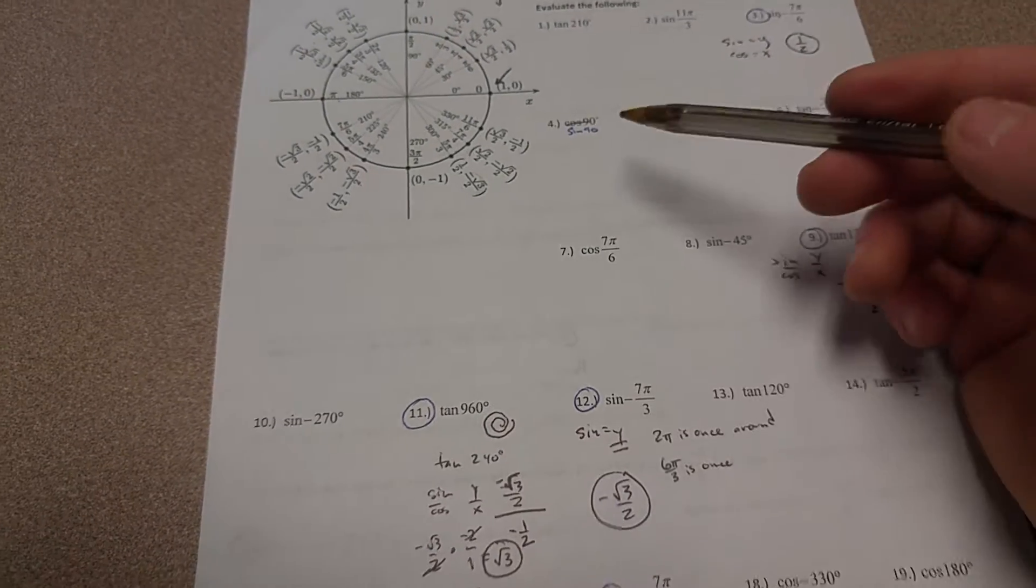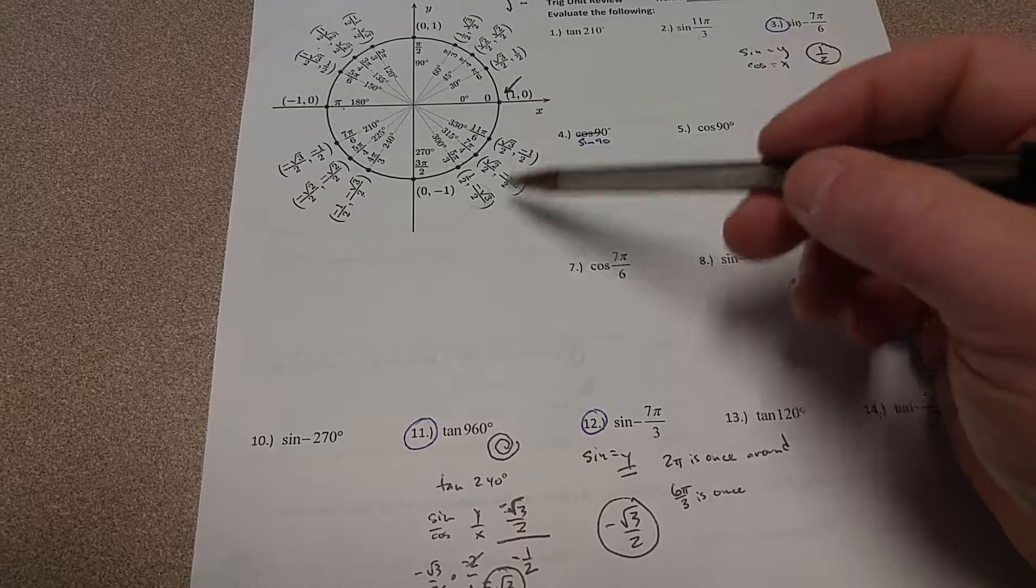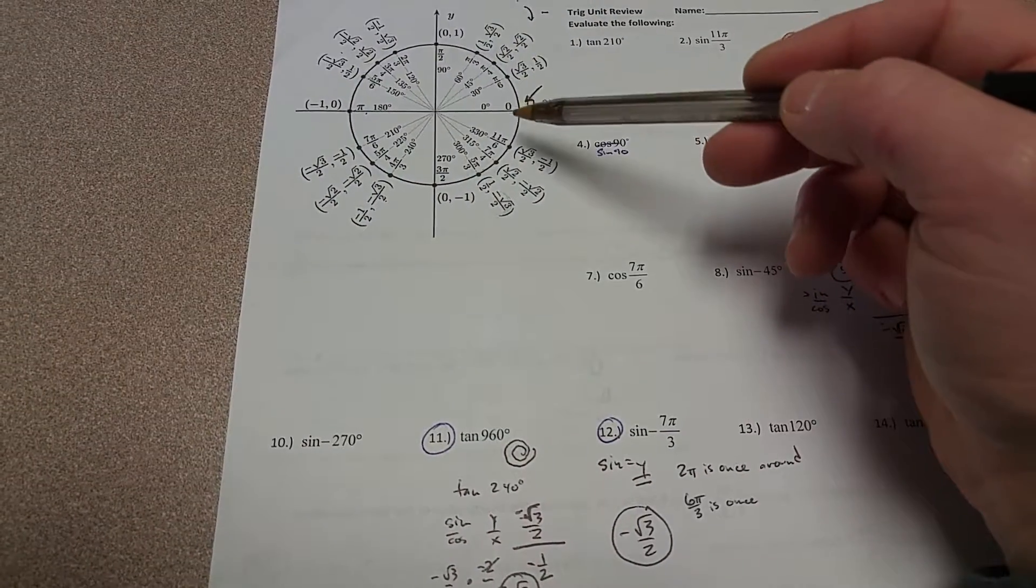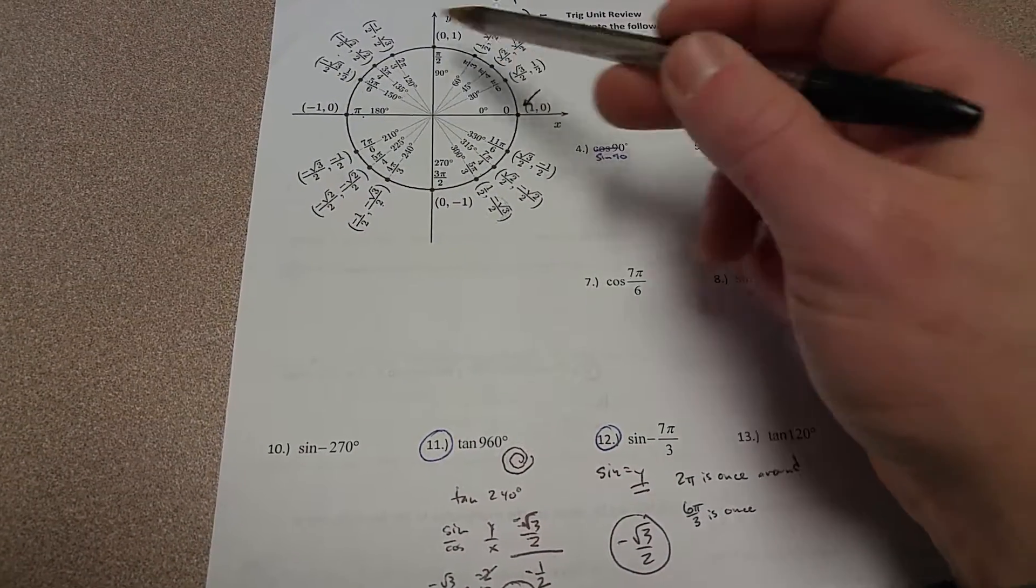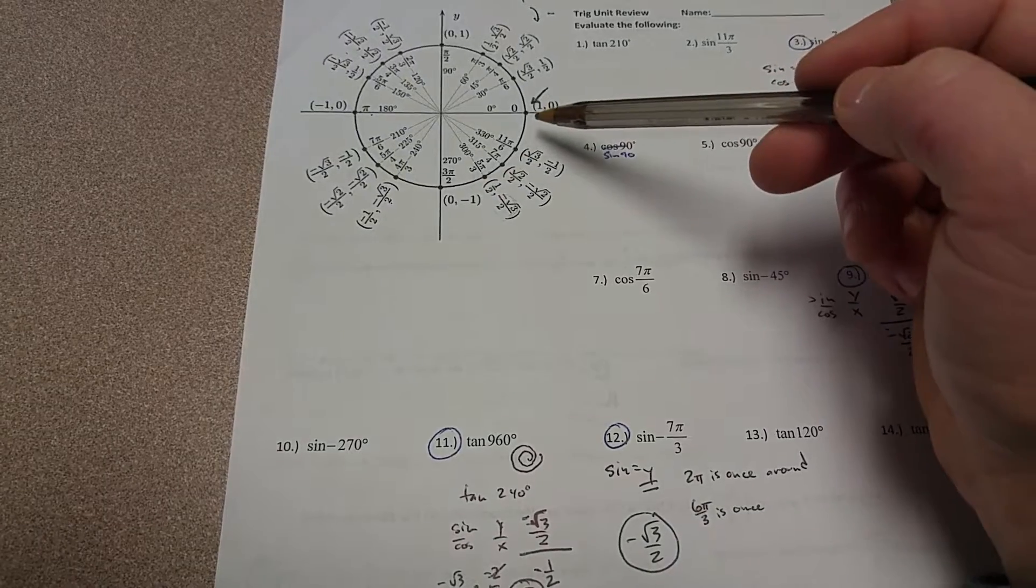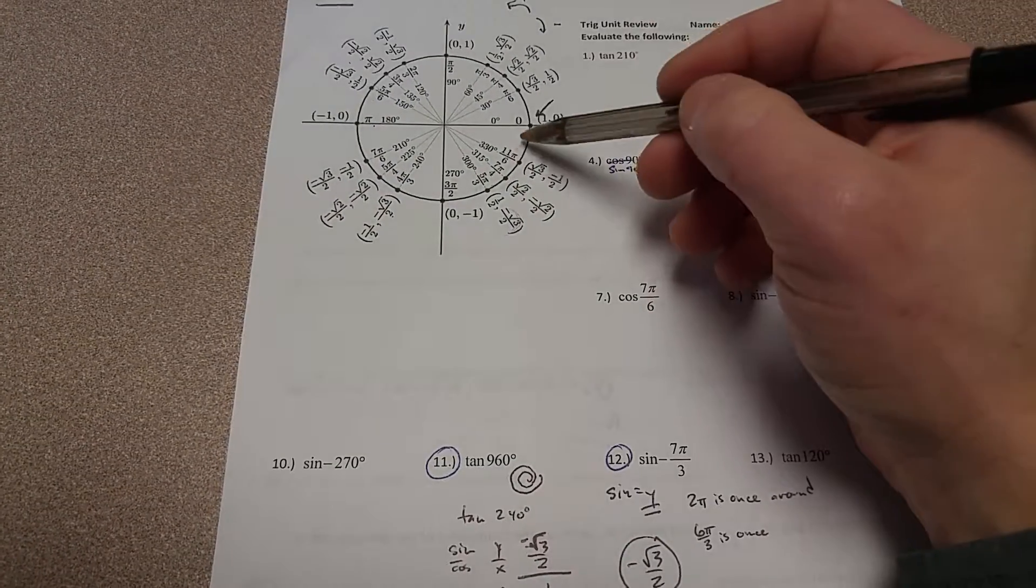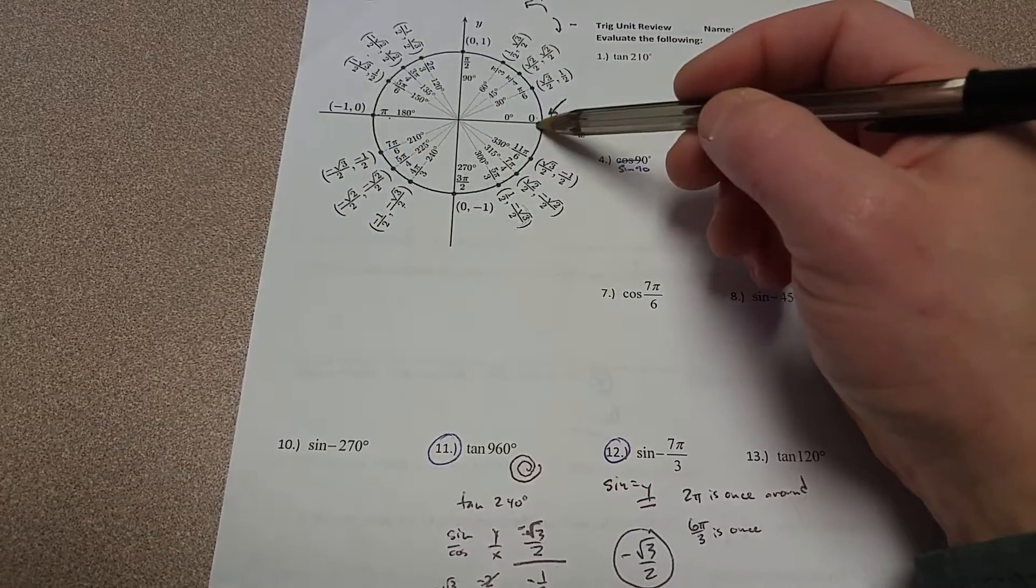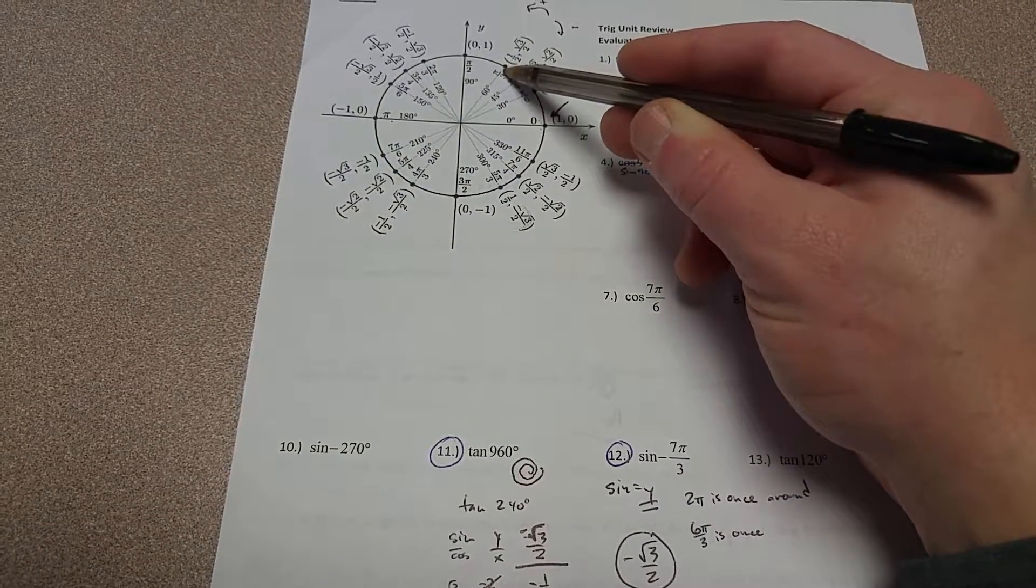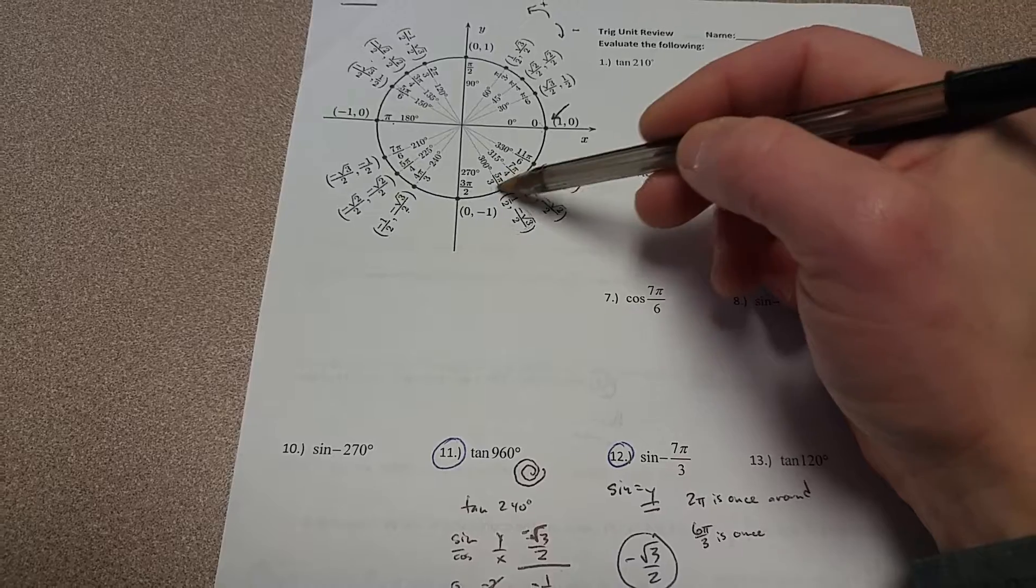And again, we wanted to go around in this direction, 7π over 3. We could have gone around in this direction, 7π over 3, and then reflected it to take care of the negative. So that would have been 6π over 3 plus another π over 3 to right here, and then if we reflect it, we still end up right down here.